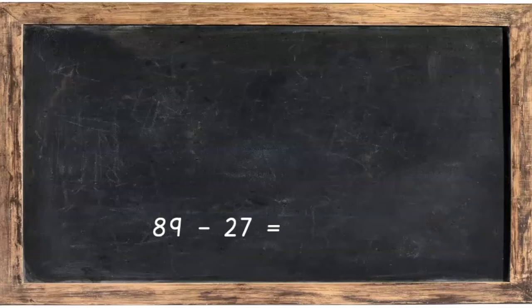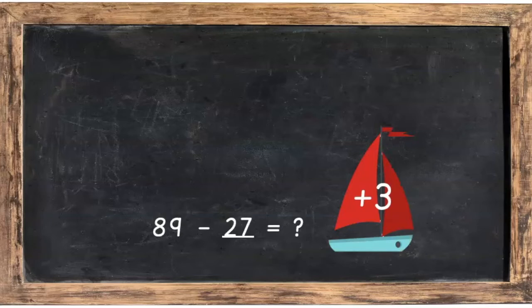Okay, here we've got 89 take away 27. We're going to try to find the answer to this sum in our heads. So to start answering the sum, we're going to start with 27 and we're going to make it bigger by 3 this time because 3 is near to 30. Again, the trick is you get the same answer if you raise both numbers by the same amount.